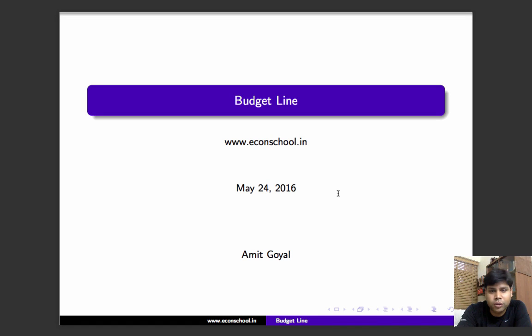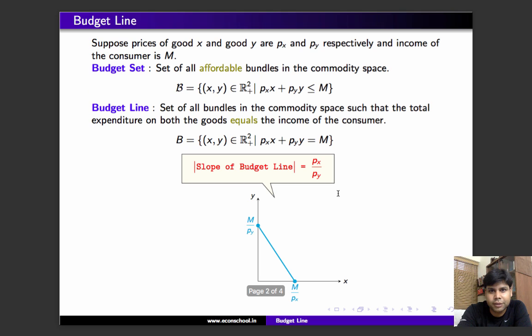Welcome back. In this video we'll learn about the constraint set. The constraint in this consumer's problem is simple. We have already learned about the budget set, which is simply the set of all alternatives that cost less than or equal to M.